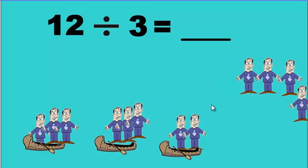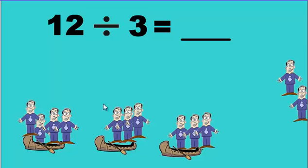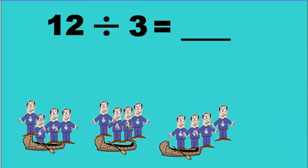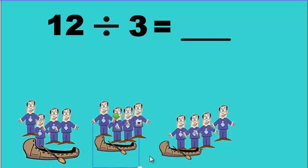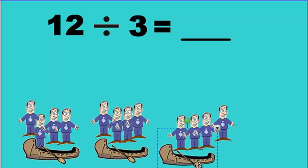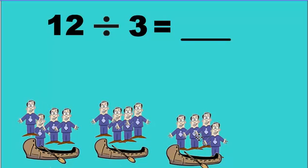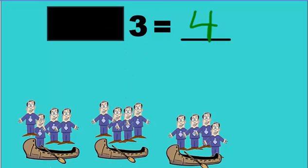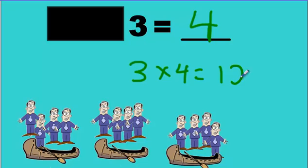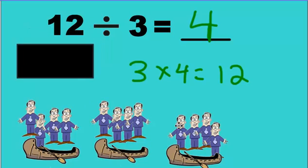So we put one person here, one there, one here — going around until we've placed everyone. We end up with four, four, and four — it's fair. We write four as our answer. Then we check with multiplication: three times four. Three groups of four is twelve. Twelve and twelve match — we did it correctly.